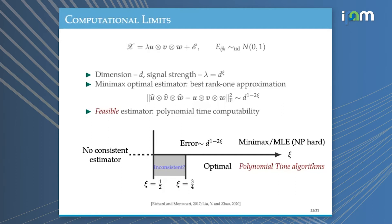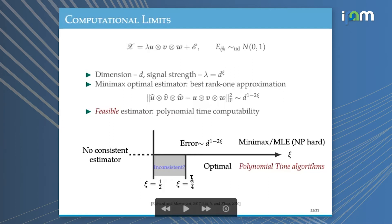This brings us back to an earlier point: everything has to do with signal-to-noise ratio, especially from a statistical point of view when we take computation into consideration. If the signal-to-noise ratio is high, the problem becomes computationally easier, and we can find a good procedure to derive rate-optimal estimates. Let me explain how we achieve this when xi is greater than three quarters.